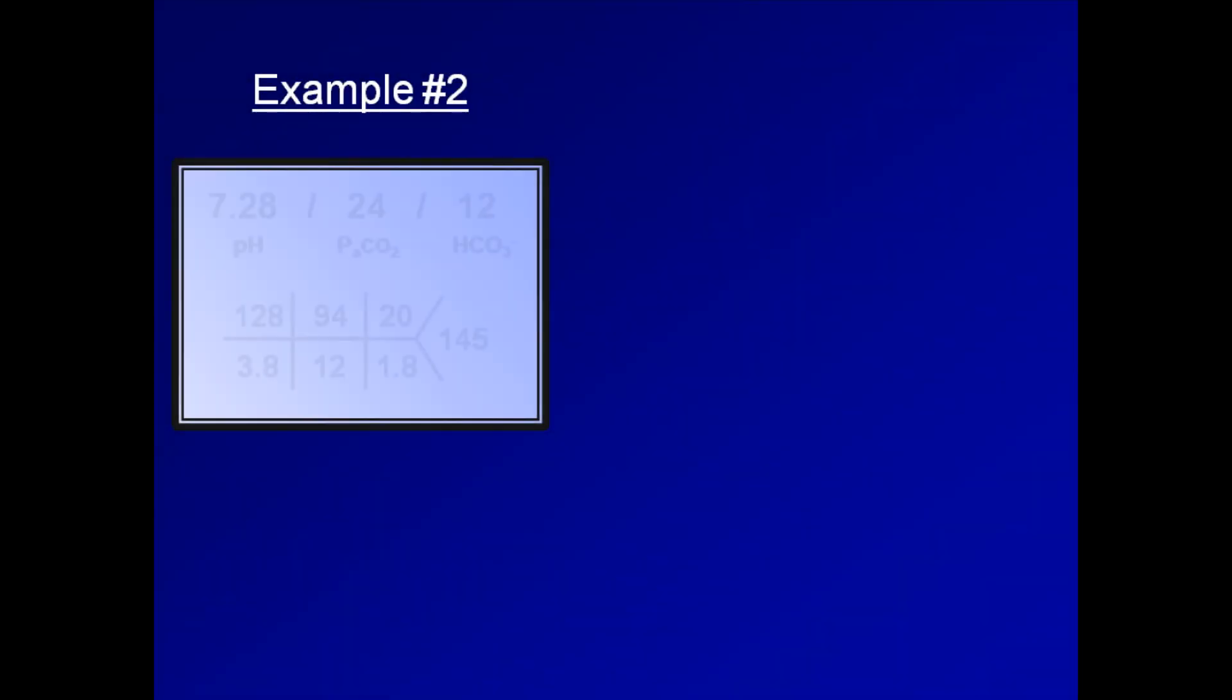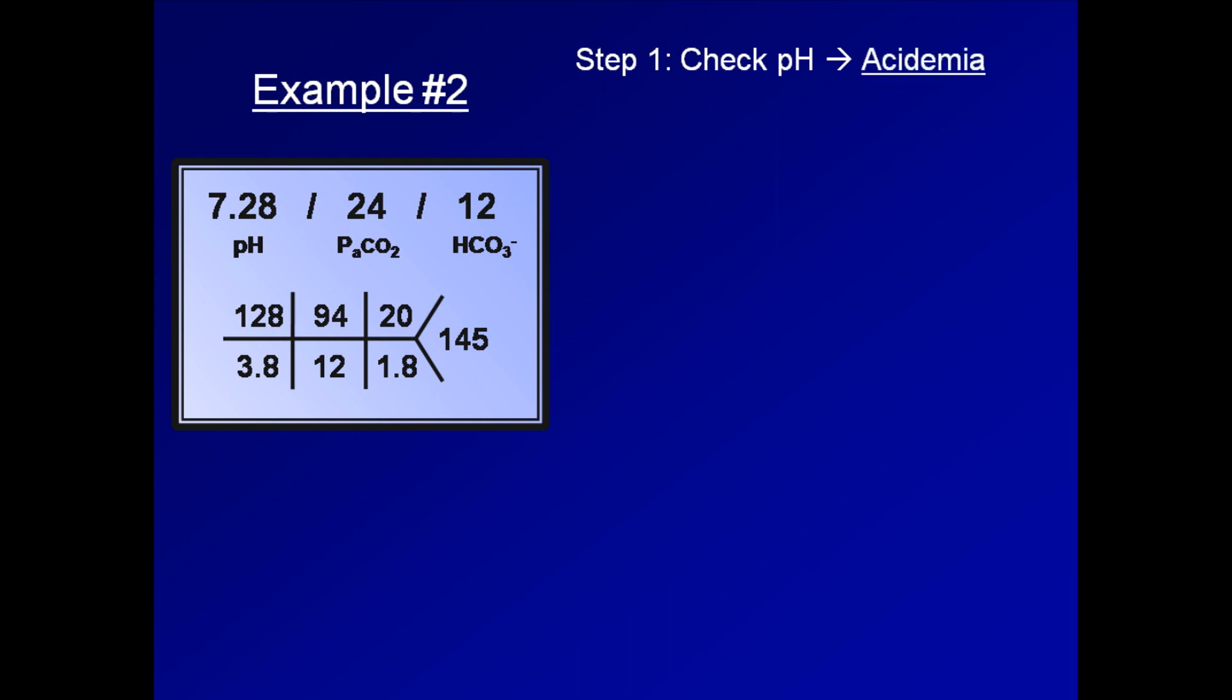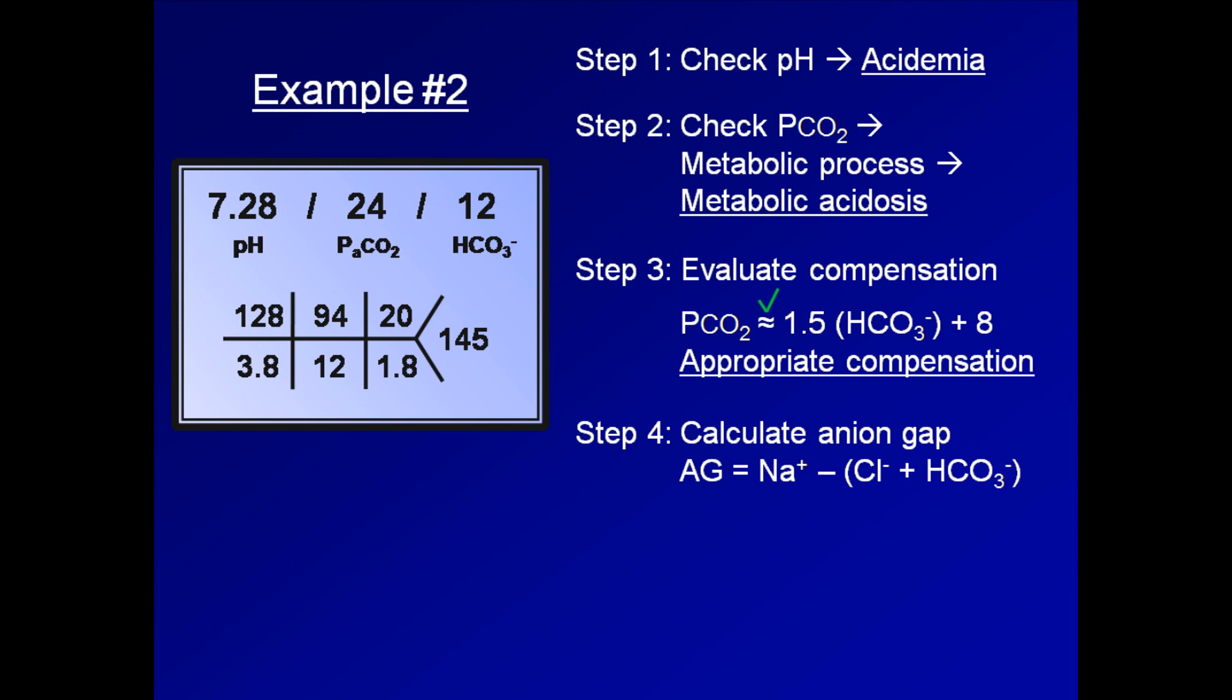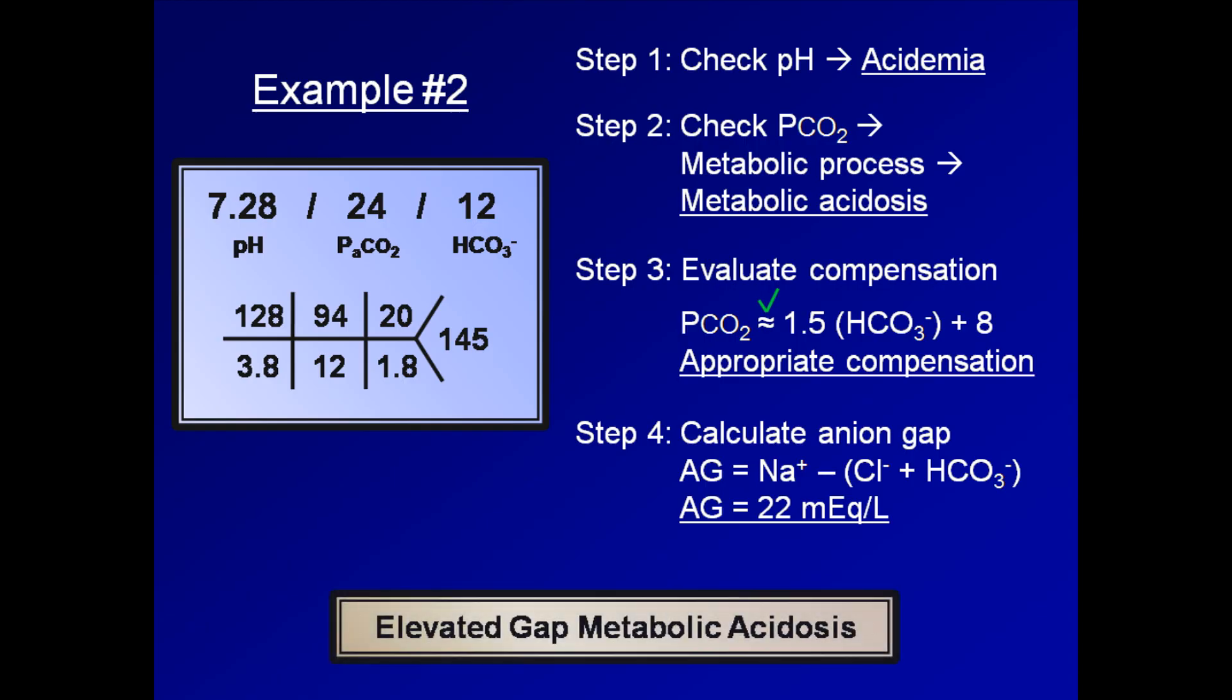Example number two, pH 7.28, pCO2 24, bicarb 12. Step one, the low pH tells us that this patient has an acidemia. At step two, the concurrently low pCO2 tells us that it is a metabolic process, and therefore a metabolic acidosis. For evaluating compensation, we use Winters formula again. Does the pCO2 of 24 approximately equal 1.5 times 12 plus 8? And it's close enough to call good. Thus, compensation is appropriate. Our anion gap again is sodium minus the sum of chloride and bicarb. So, 128 minus the sum of 94 and 12, which is 22. Thus, this patient has an elevated gap metabolic acidosis.